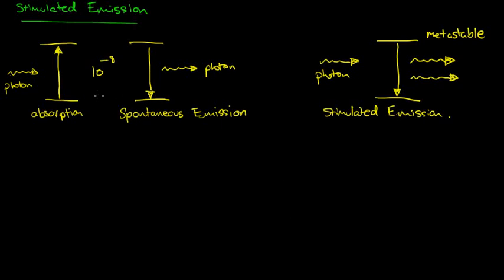Hello again. In the last video we were talking about lasers and the last thing we were talking about was stimulated emission. So we have a photon incident on an atom. This atom absorbs the photon and transitions to a higher energy level which corresponds exactly to the energy of that photon. 10 to the minus 8 seconds later, that same atom transitions to a lower energy state or the ground state and emits a photon by the conservation of energy.